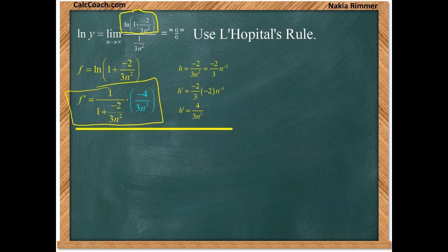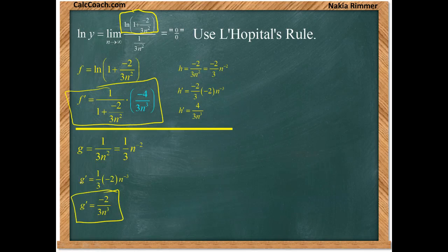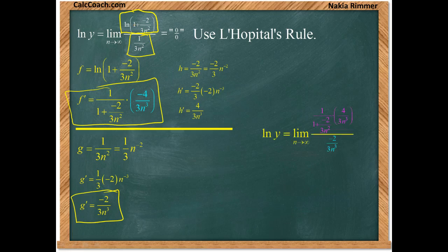Now let's deal with the denominator's derivative — it's just one over three n squared. We bring n squared up as n to the negative two power and apply the power rule: bring the negative two down and decrease the exponent by one to give negative three as the new exponent, with coefficient negative two thirds. We can bring that n cubed back down. L'Hôpital's rule says we can trade in our limit for the limit of the derivative of the numerator divided by the derivative of the denominator.